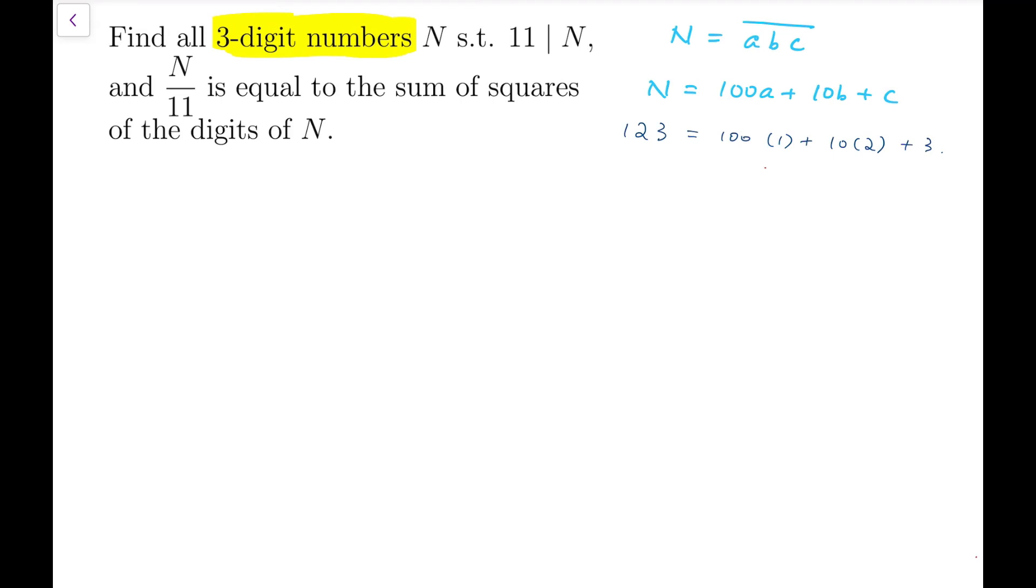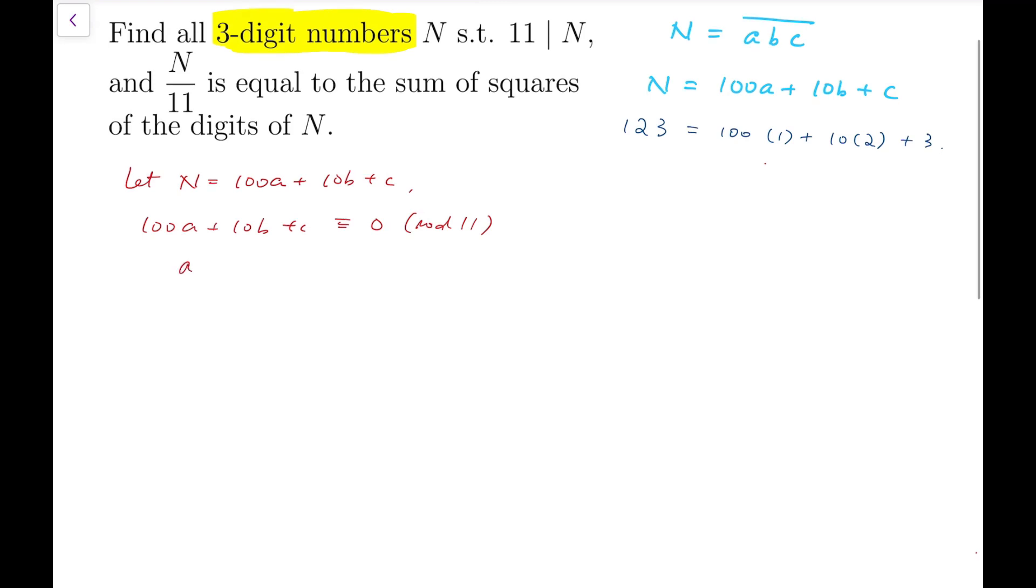So for such an N, given that 11 divides N, I will say that it's congruent to 0 mod 11. And reducing the coefficients, I will have a minus b plus c is congruent to 0 mod 11. Now from the fact that a, b, and c only take values 0 through 9, we know that there are only two possible values for a minus b plus c, which is that either a minus b plus c is 0 or 11. This value cannot take minus 11 or 22 because of the constraints.